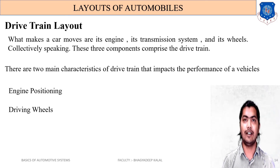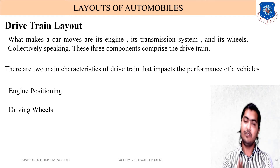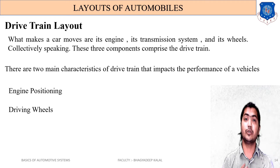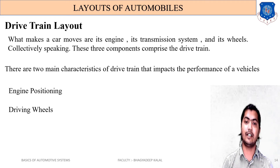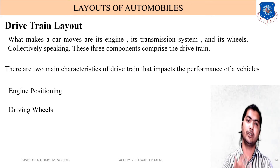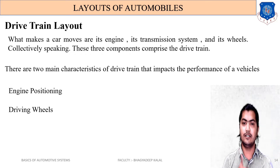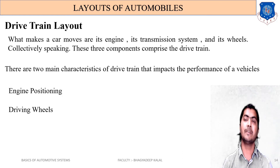Now, what is the drive train? The components used to drive a vehicle — or to provide propulsion in the forward or reverse direction — are collectively called the drive train. The three main components responsible for driving a vehicle are the engine, the transmission system, and the wheels. Together these three components comprise the drive train.